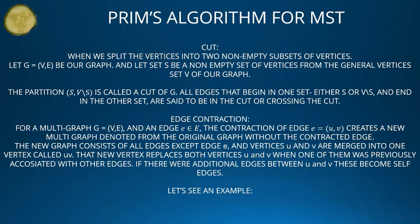Prim's algorithm for MST — the cut. When we split the vertices into two non-empty subsets of vertices, let graph G = (V, E) be our graph, and let set S be a non-empty set of vertices from the general vertices set of our graph. The partition S, V minus S is called a cut of G. All edges that begin in one set, either S or V minus S, and end in the other set, are said to be in the cut or crossing the cut.